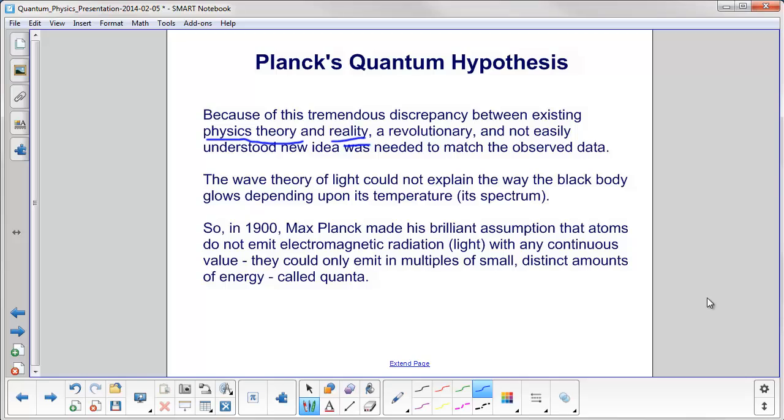So in 1900, Max Planck made his brilliant assumption that atoms do not emit electromagnetic radiation, that is light, with any continuous value. They could only emit it in multiples of small, distinct amounts of energy, and this was named quanta.